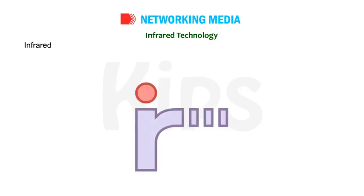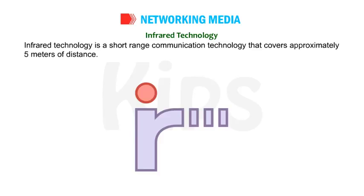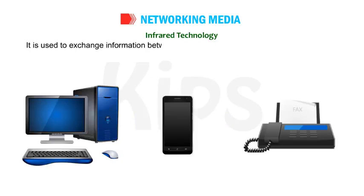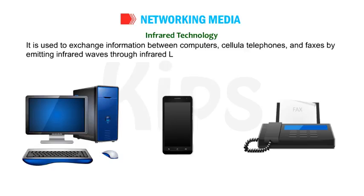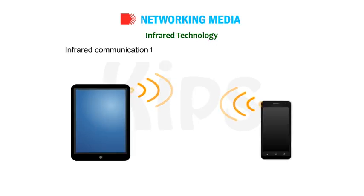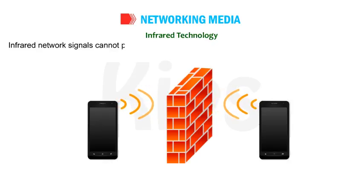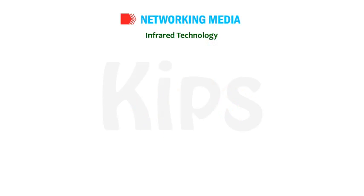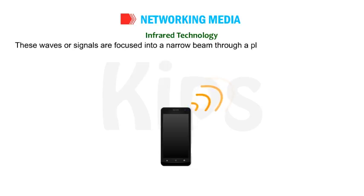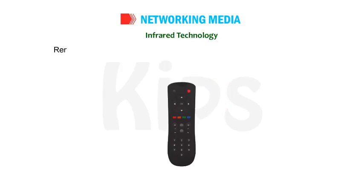Infrared Technology: Infrared technology is a short-range communication technology that covers approximately 5 meters of distance. It is used to exchange information between computers, cellular telephones and faxes by emitting infrared waves through infrared LEDs. Infrared communication takes place between two devices at a time. Infrared network signals cannot penetrate walls or other obstructions and work only in a direct line of sight. These signals are focused into a narrow beam through a plastic lens, which is further converted into electronic signals by the receiver. Remote control is the most common example of infrared communication.